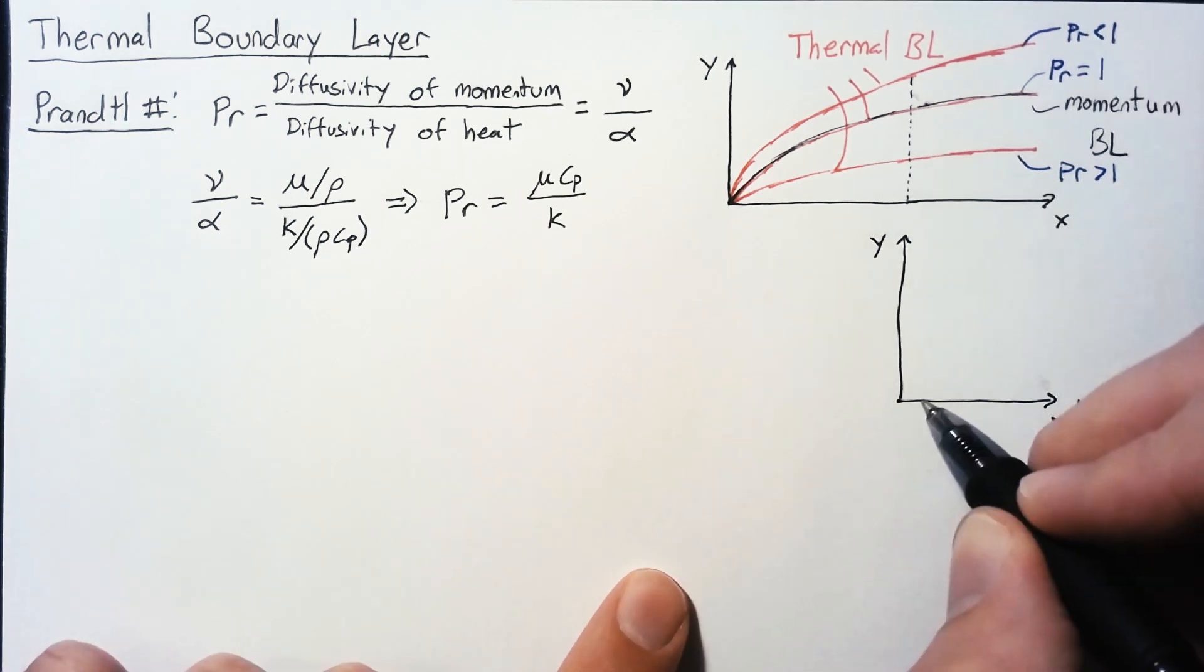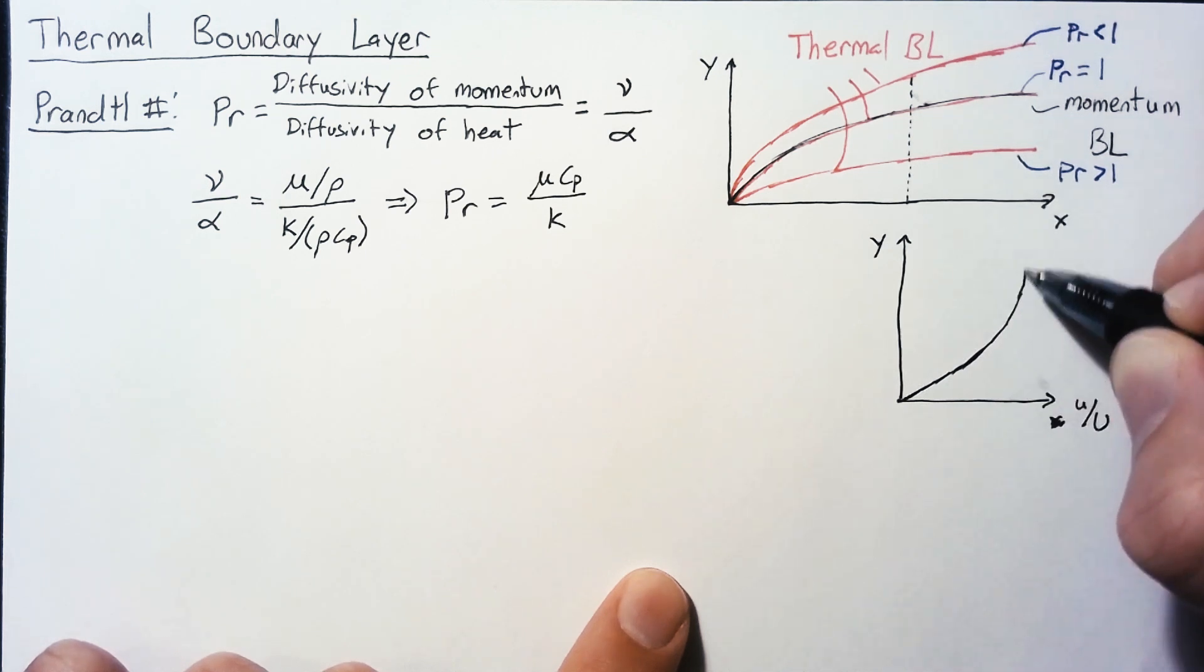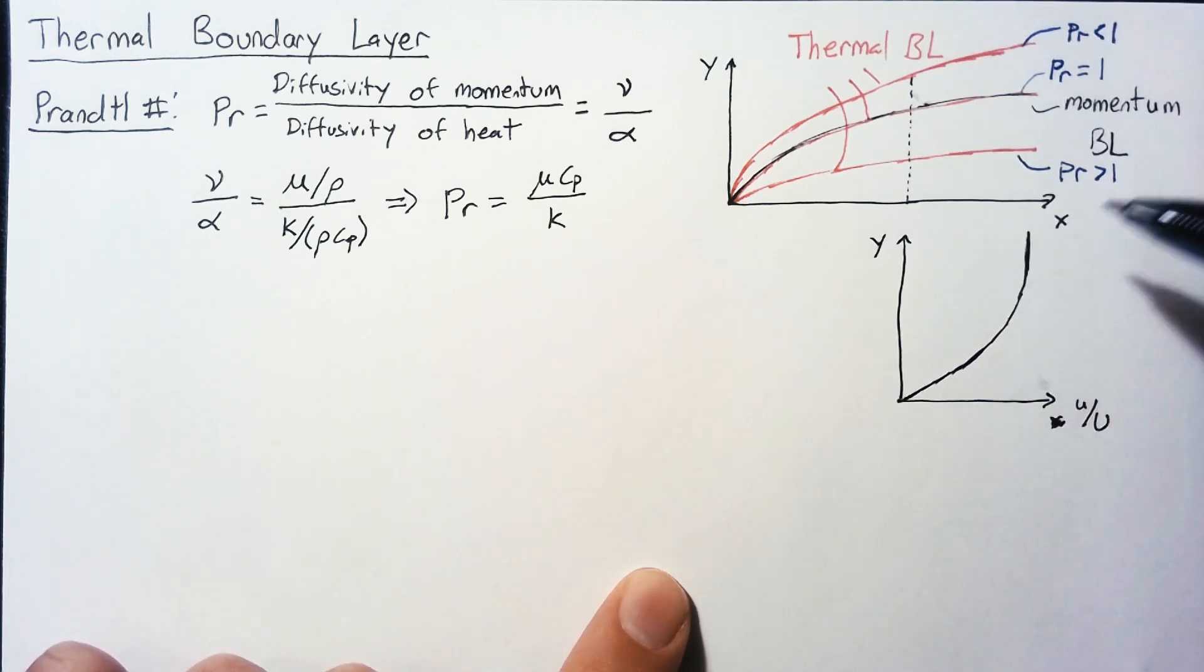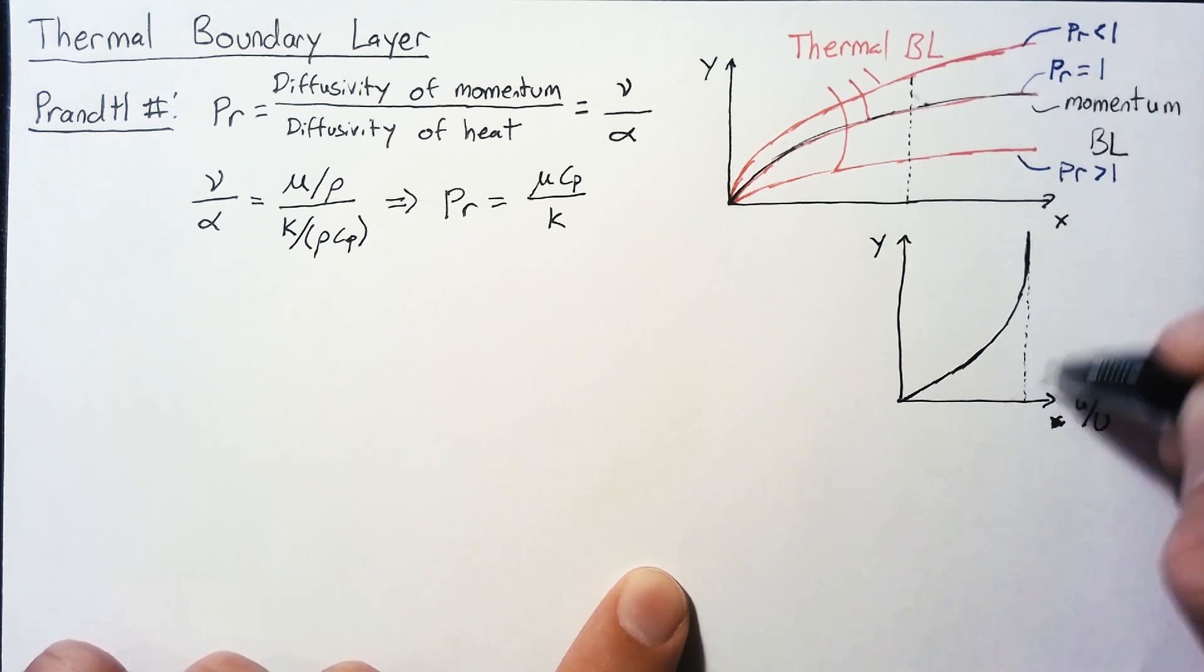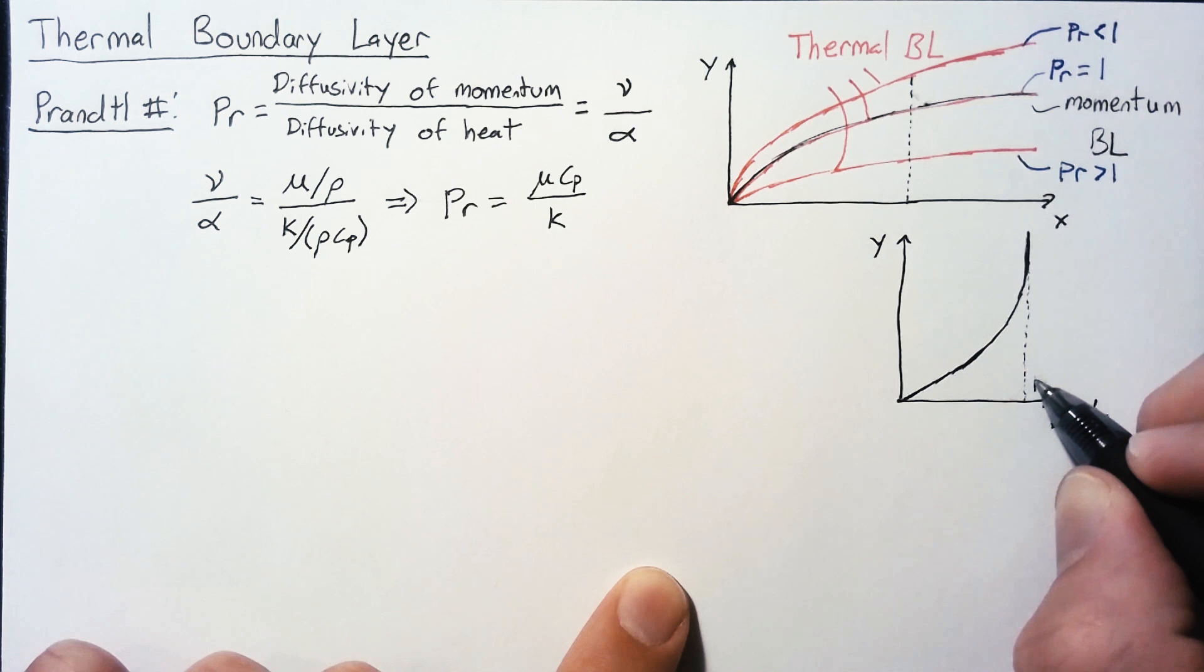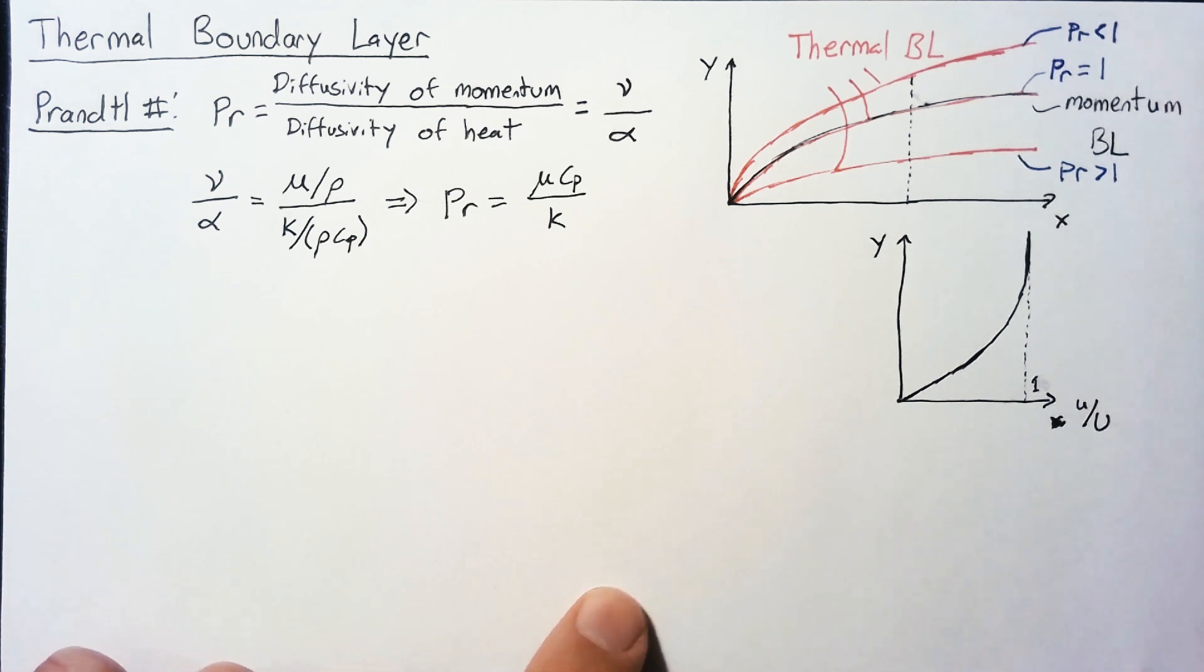For a standard momentum boundary layer, we expect the velocity to increase linearly at first and then curve into whatever our max velocity is. So this value right here would be one, the point where our local velocity, lowercase u, is equal to the outside velocity, uppercase U.